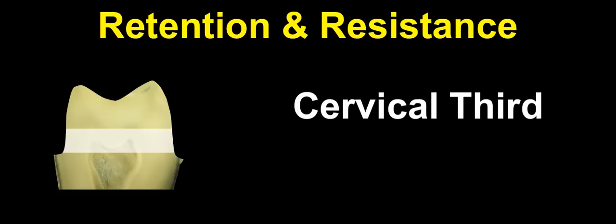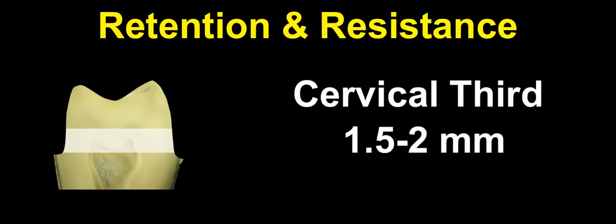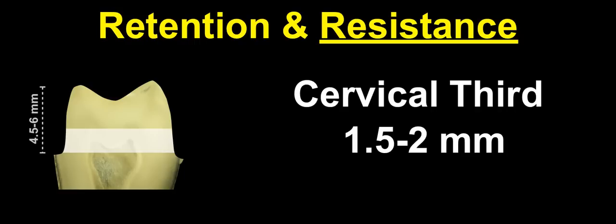If at the cervical third we have 1.5 to 2 mm of solid tooth structure around the tooth, parallel to one another, this would correspond — if the cervical third multiplied by 3 — to a height of our preparation of 4.5 to 6 mm, which is higher than our minimum requirements of 3 to 4 mm. So if we have enough tooth structure — 1.5 to 2 mm — at our cervical third, our preparation will have resistance form.